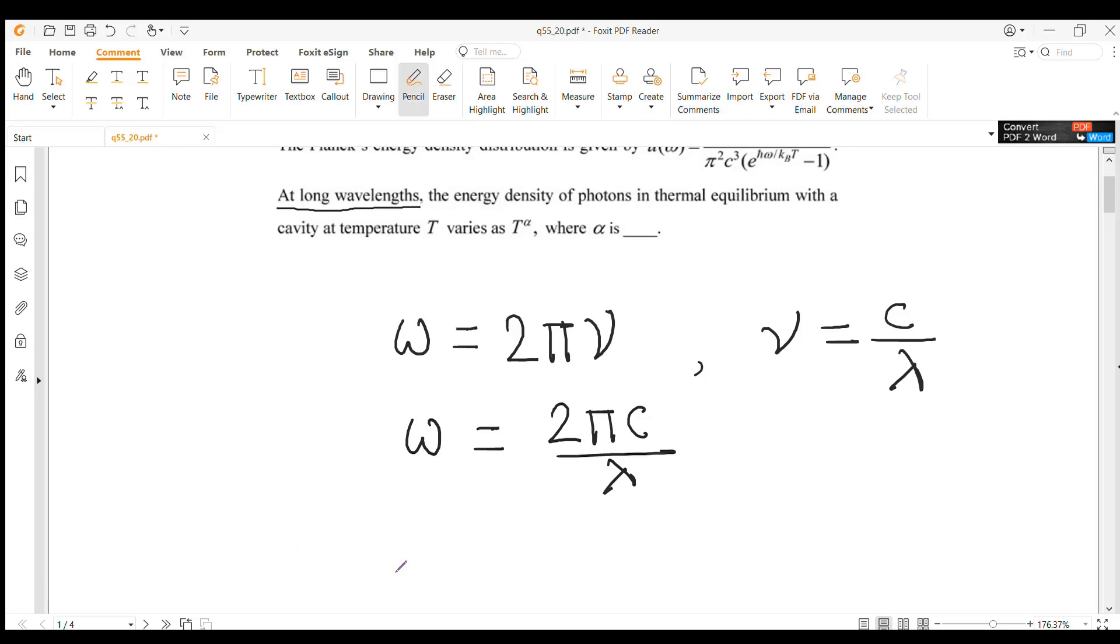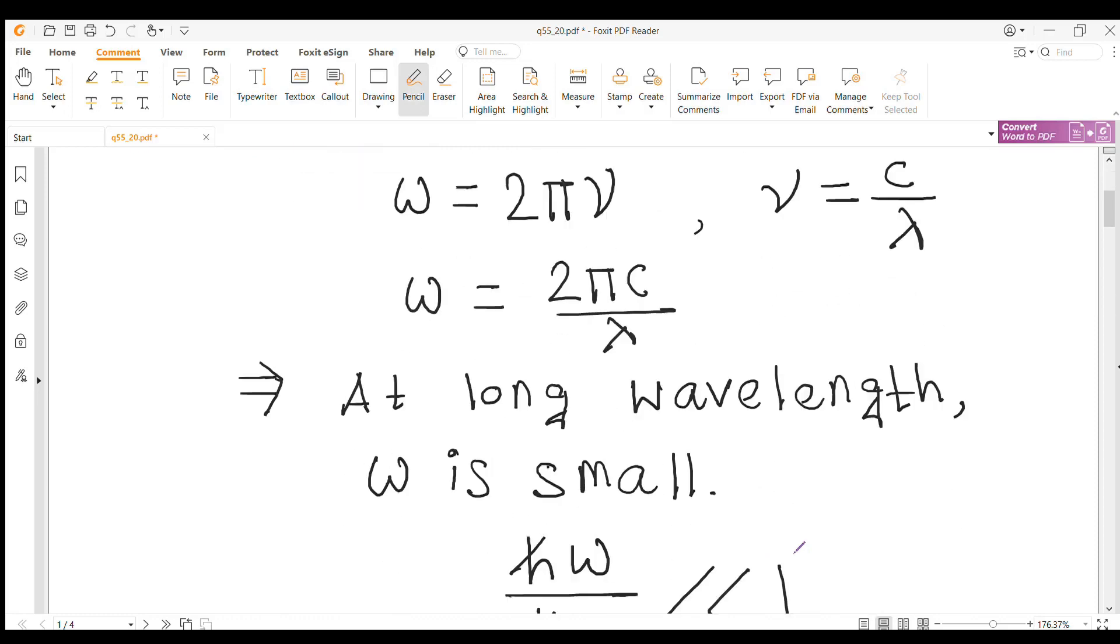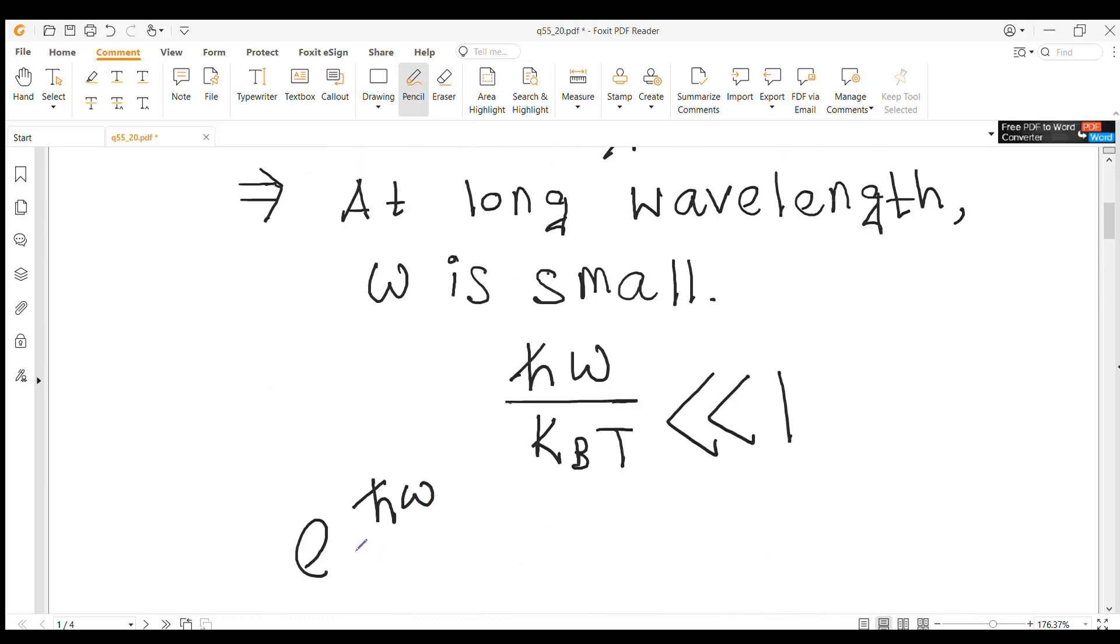Thus at long wavelength, omega is small. This means at long wavelength we have h bar omega by kT much smaller than 1. In this limit we can write e to the power h bar omega by kT as 1 plus h bar omega by kT.